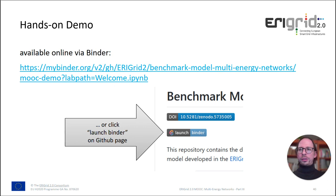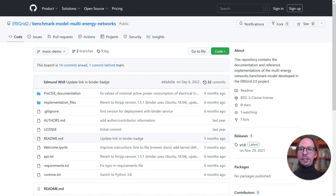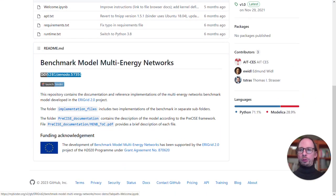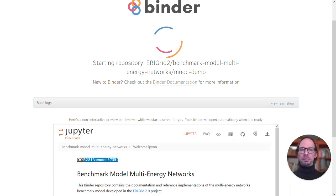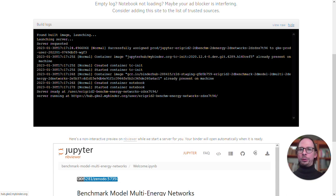What I showed you so far is all available online via Binder. You can follow the link to try this out yourself. Either follow the link or go to the website of the simulation benchmark and click on the launch Binder button. I will do that now and switch to my browser. You can see the repository on GitHub. If I scroll down, I have the launch Binder button, and clicking it will redirect to Binder, which will start a container in the background that runs the example.